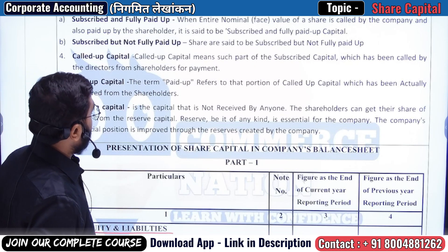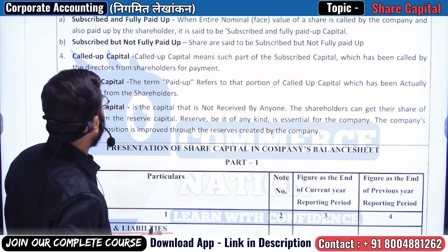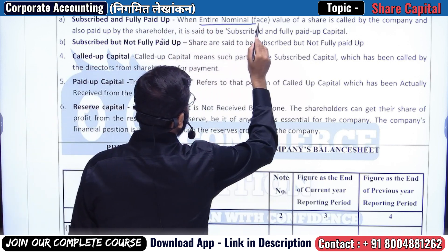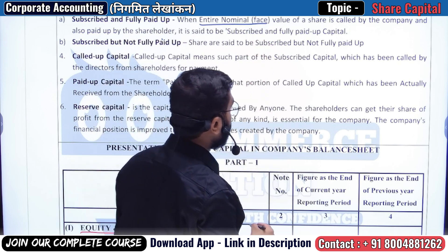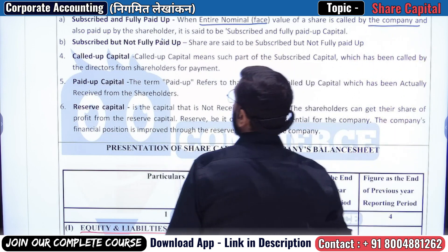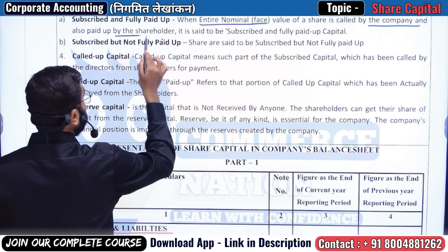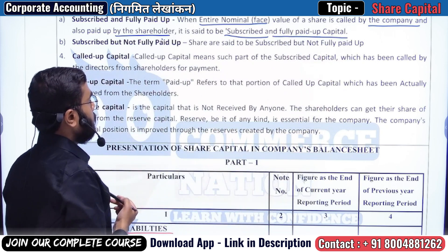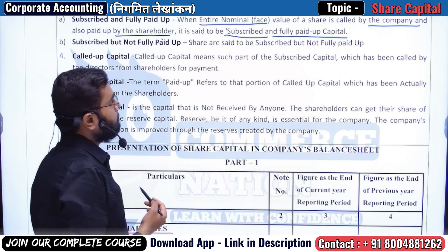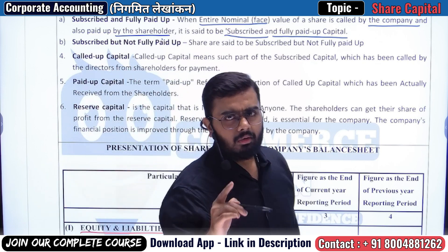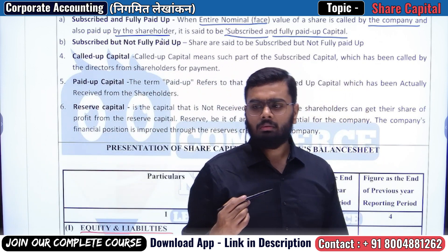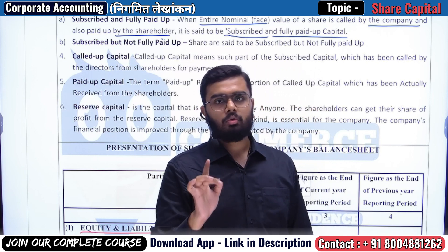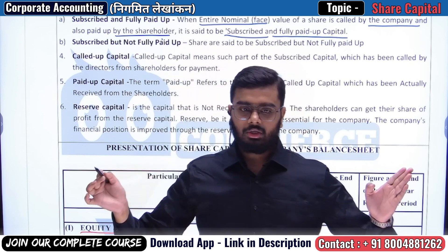Then comes subscribed and fully paid up, which is also a type of share capital. Let's understand: the face value or nominal value of a share — for example, in our case, the 500 crore worth of shares were issued with each share having a face value of 100 rupees. So the face value is 100 rupees per share, and there are shares worth 500 crore.